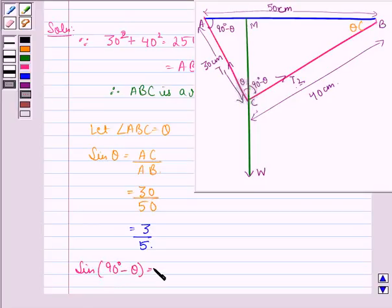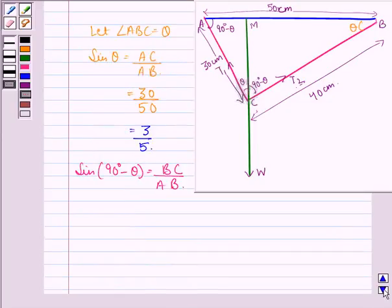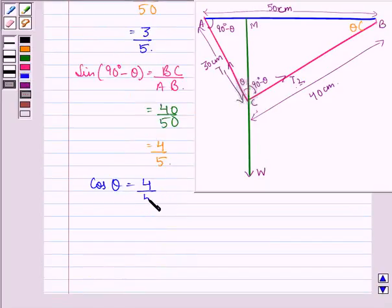And we see that sin of 90 degrees minus theta is equal to BC upon AB that is equal to 40 upon 50 and that is equal to 4 by 5. Or we can say that cos theta is 4 by 5.